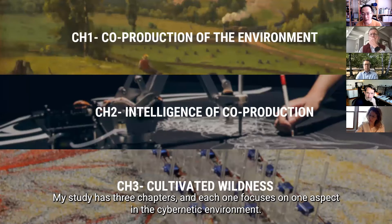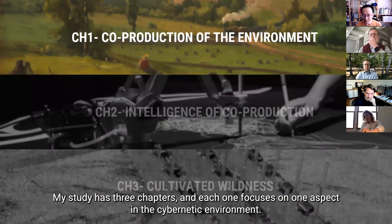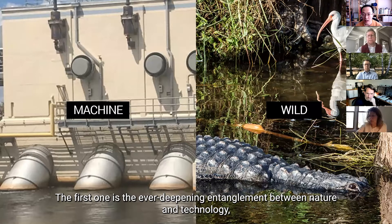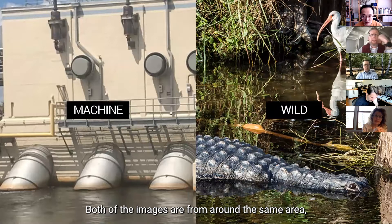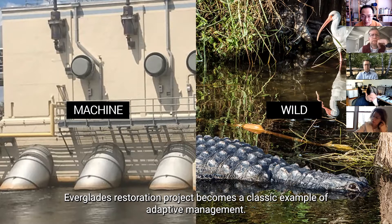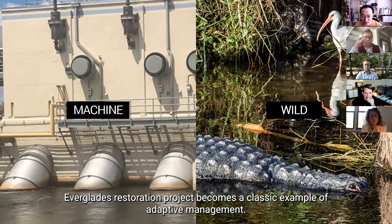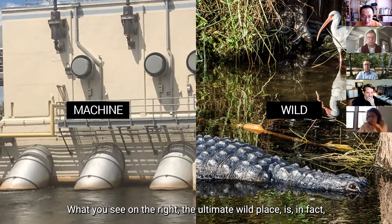So my study has three chapters, and each one focuses on one aspect in cybernetic environment. The first one I want to talk about is the ever-deepening entanglement between nature and technology, between biotic and abiotic in all kinds of environmental processes. Both of these images are from around the same area, the Everglades in South Florida. Everglades restoration project becomes a classic example of adaptive management.